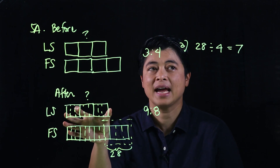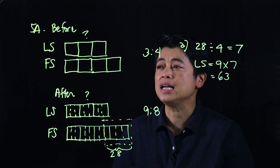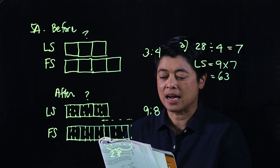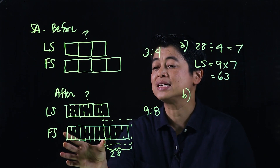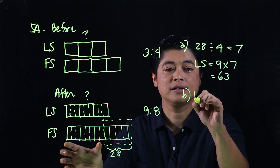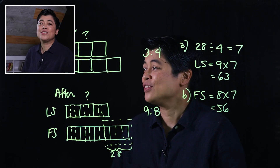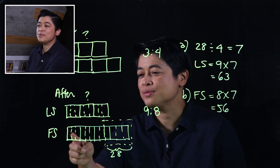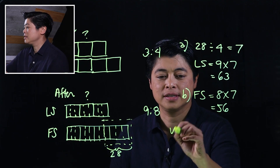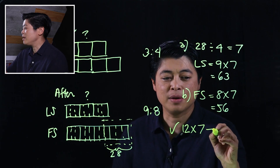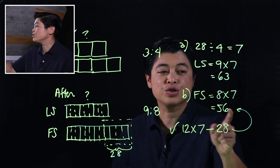The four units equal twenty-eight, so twenty-eight divided by four means each unit is seven. The local stamps are nine units, so nine times seven equals sixty-three local stamps. For letter B, how many foreign stamps did Nadim have in the end? That's eight units times seven, which is fifty-six. To confirm: the original foreign stamps were twelve units times seven equals eighty-four, minus twenty-eight equals fifty-six. Correct.